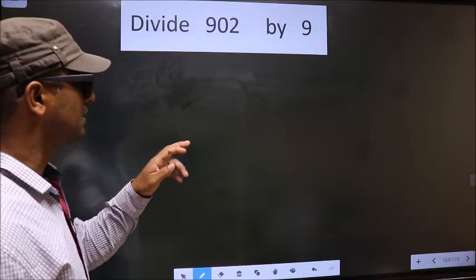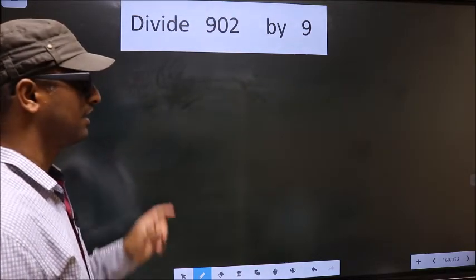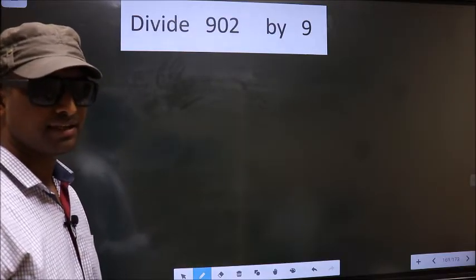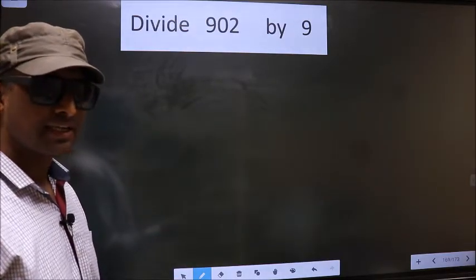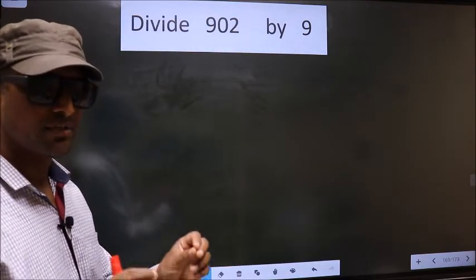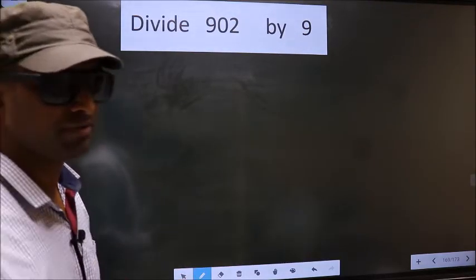Divide 902 by 9. While doing this division, many do this mistake. What is the mistake that they do? I will let you know. But before that, we should frame it in this way.